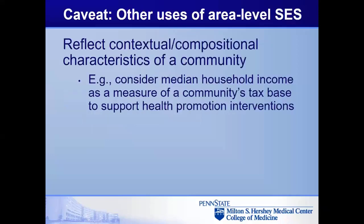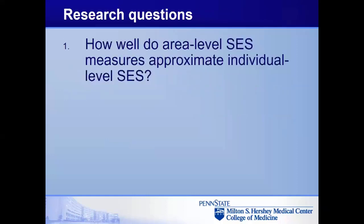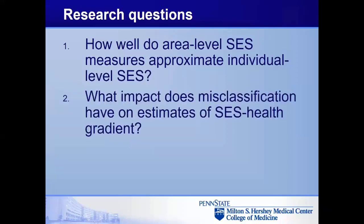I want to acknowledge that we can use area-level measures of socioeconomic status for other purposes — principally to reflect characteristics of a community. For example, median household income in a county can reflect the tax base to support education or health promotion initiatives. That's more of a contextual variable rather than a proxy for individual-level SES. For this study, I wanted to examine the concordance and agreement for area-level SES measures versus individual measures, and assess how much this misclassification influences our estimates of the relationship between SES and health outcomes.